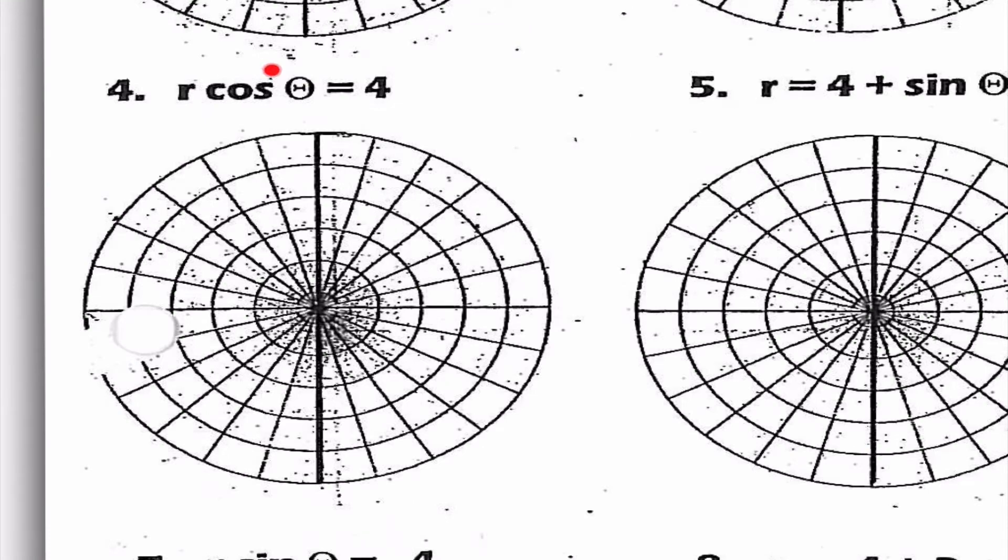Number four, we have this r cosine theta, and we need to remember r cosine theta is equal to x. So that means that this is just a line. So that means I'm going to go to the right one, two, three, four, and draw a vertical line that is going straight up and straight down.